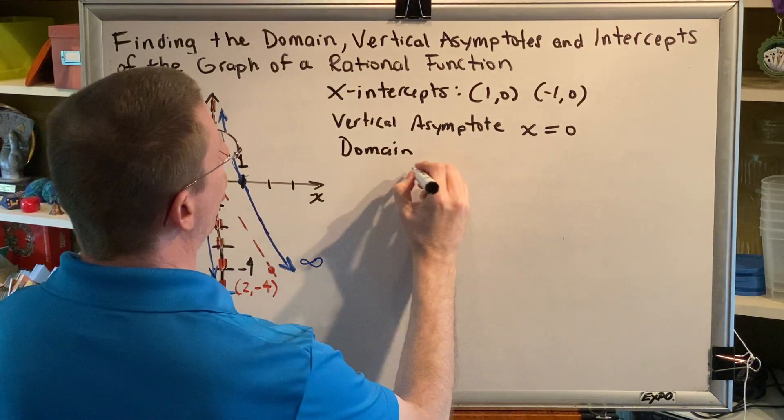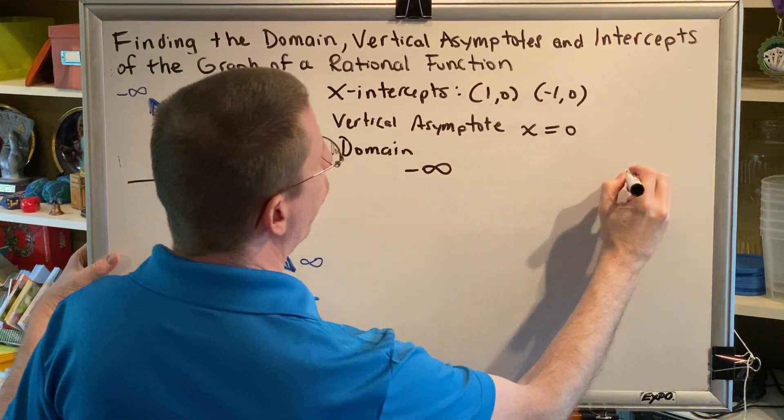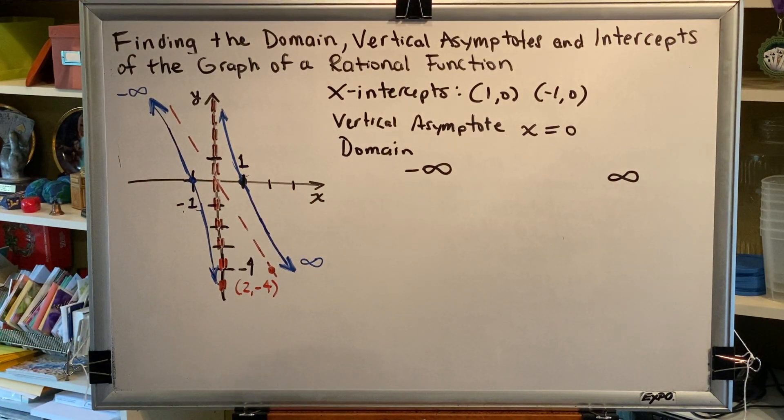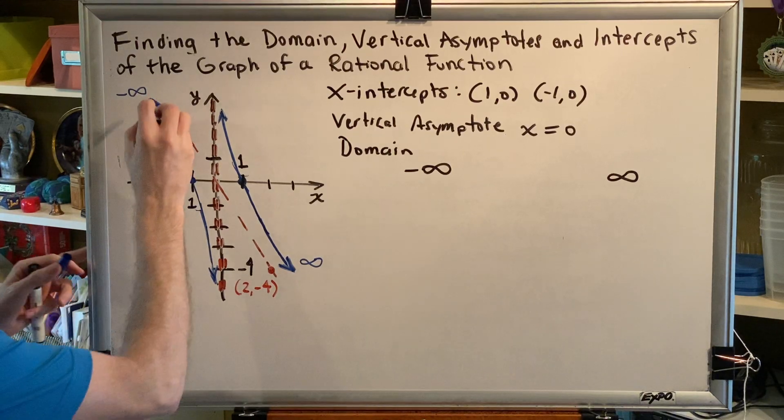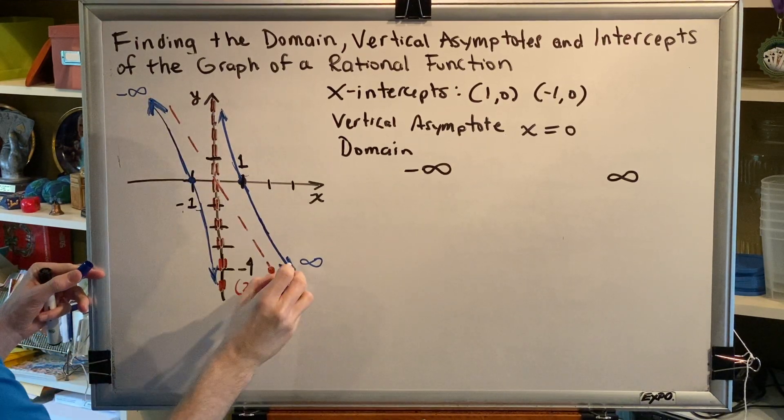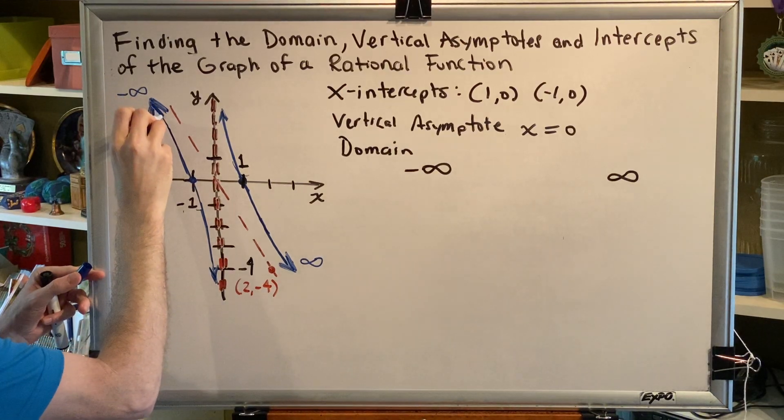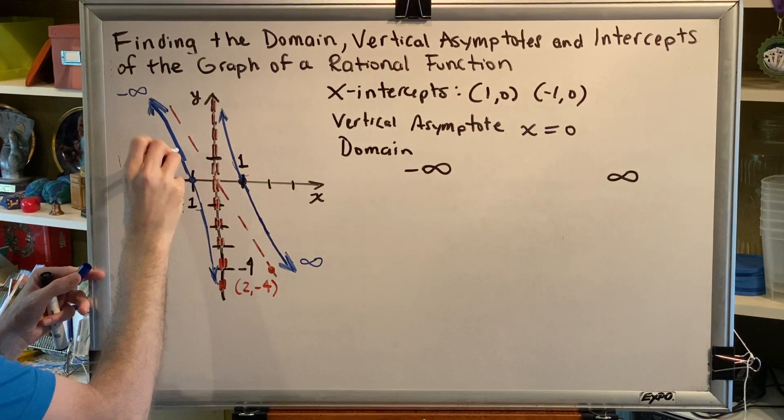So our graph appears to go from negative infinity all the way to positive infinity. But are there any missing values along that journey? Can we trace a path from this blue arrowhead to this blue arrowhead by moving along the blue curve without picking up our marker? And the answer is no.